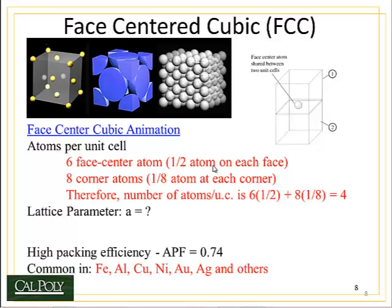You can see here in the ball-stick model that you have eight atoms at the corners of the cube, but now we also have an atom sitting in the center face of each side of the cube. This is the hard sphere model — it's a little bit easier to see. You've got an eighth of an atom in each corner and a half an atom along each face.